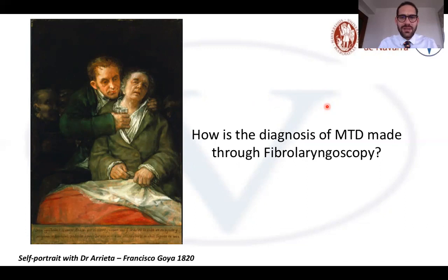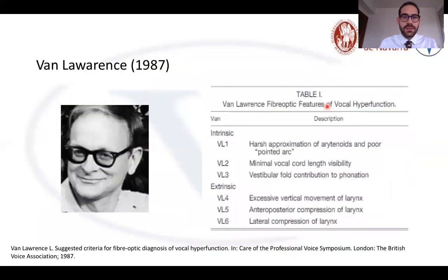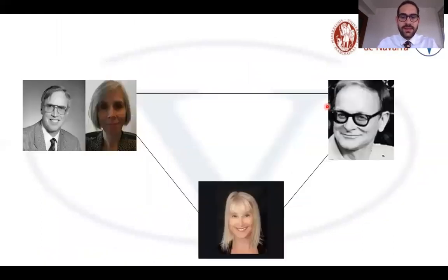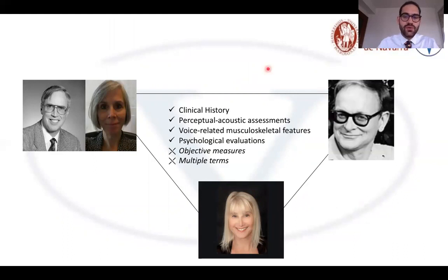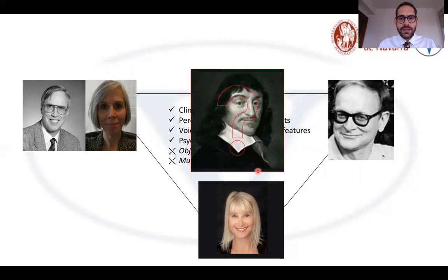Flexible laryngoscopy is widely used for the diagnosis of MTD. To date, there are three main classification systems described: the first by Ramach and Morrison in 1986, the second by Van Lawrence in 1987, and the last by Jamie Kaufman in 1991. However, there is no international consensus on which classification system should be used. All three systems are based on clinical history, perceptual and acoustic assessments, musculoskeletal features, and psychological evaluation, but none are based on objective measures, and terminology can be confusing.